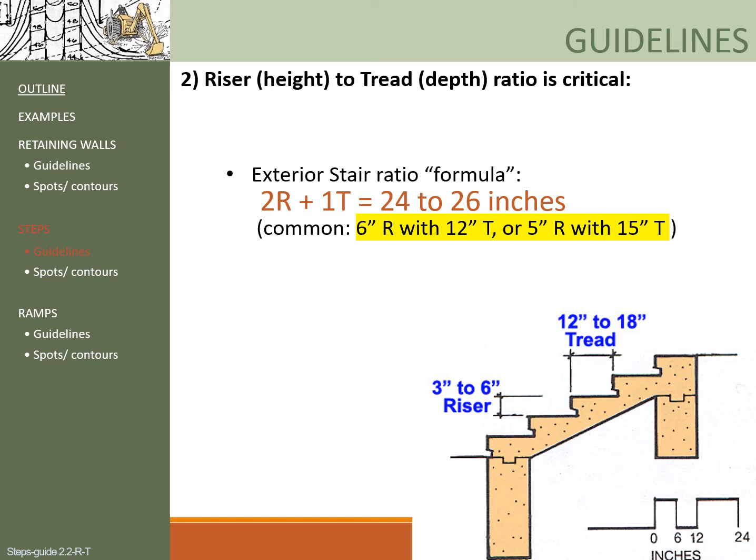Note that one step might be okay in some occasions, such as at a gate or onto a deck where a material change makes that step more evident. There is a formula you can use to calculate either your tread or your rise based on the other. For a 6-inch tall riser, the tread would be 24 to 26 inches minus 12 inches (2 times the riser), equaling 12 to 14 inches deep. For a 5-inch tall riser, the tread would be 24 to 26 inches minus 10, equaling 14 to 16 inches deep. Common dimensions are highlighted in yellow.